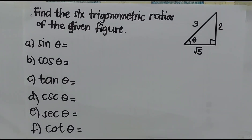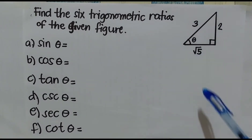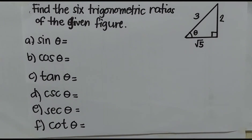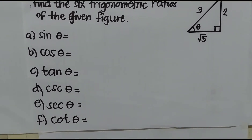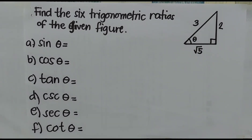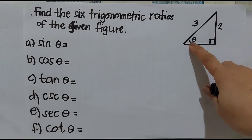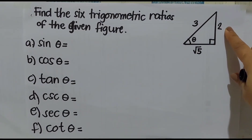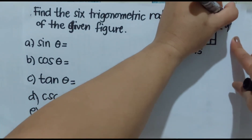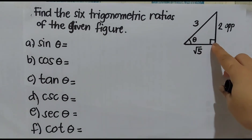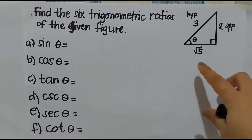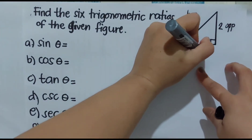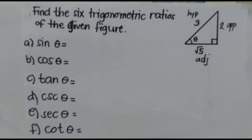Let's have this example: Find the six trigonometric ratios of the given figure. We have here a right triangle with sides 3, 2, and square root of 5. The first thing we're going to do is identify which part is the opposite side, adjacent, and the hypotenuse. If we have theta here, the side opposite to it is our opposite side. The side opposite the right angle is the hypotenuse, which means square root of 5 is our adjacent side.